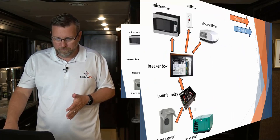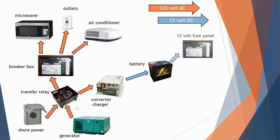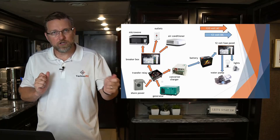The power comes in and for my DC items, that AC power hits something called a converter. This converts power from AC to DC power. From that converter, it goes to your batteries, keeping them nicely charged. From your batteries, it goes to a fuse panel — AC power goes to the breakers, DC power goes to fuses, like in a car. Once it hits the fuse panel, from there it goes out and powers your DC-dependent items. That is the flow of electricity when you're in an RV park plugged into shore power.